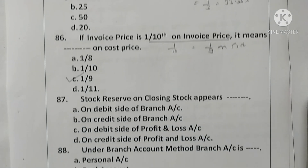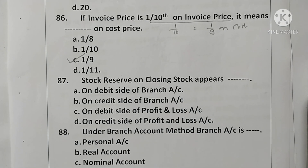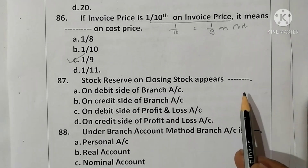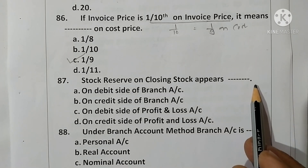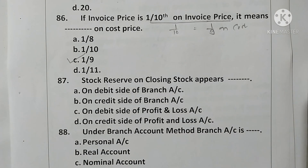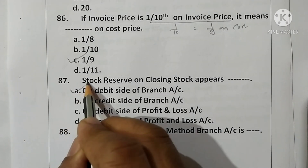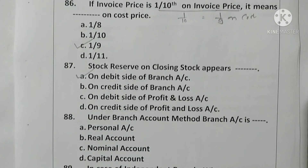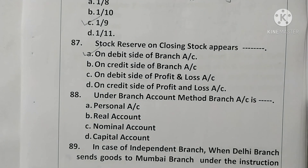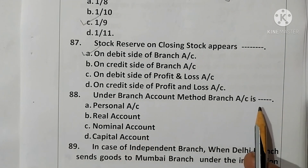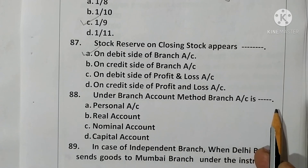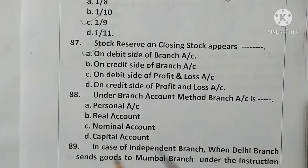Question 87: The stock reserve on closing stock appears on the debit side of the branch account. Option A is correct. Question 88: Under the branch account method, the branch account is a nominal account. Option C is correct.